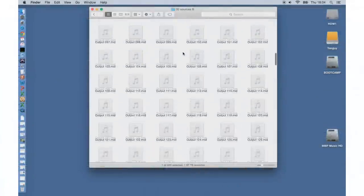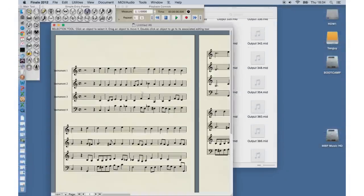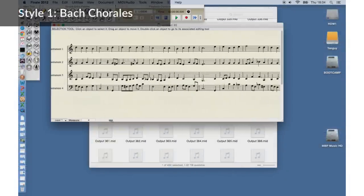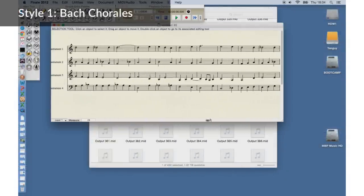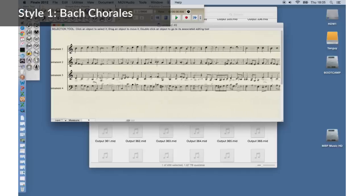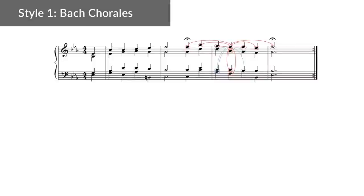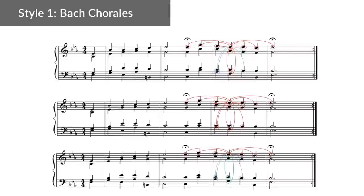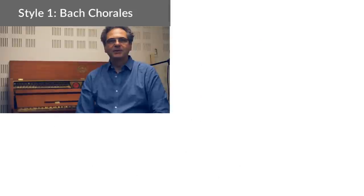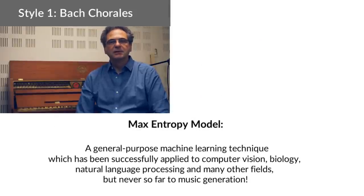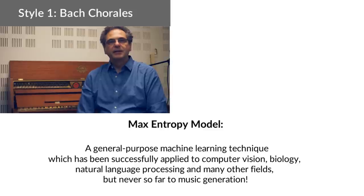The first style we picked up is the style of Bach chorales. We used a set of about 400 chorales in score notation. Here we wanted to capture the statistics of correlations between notes horizontally, but also vertically and diagonally. We used the maximum entropy model to capture those correlations and regenerate new material with the same statistics.